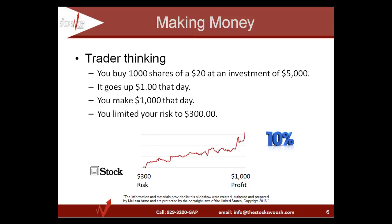Trader thinking says you buy 1,000 shares of a $20 stock and your investment is $5,000 or even less, depending on whether you have 4-to-1 or 10-to-1 leverage. The stock goes up $1 that day, you make $1,000 that day, and you've limited your risk to $300. Now you may be saying, I assumed the stock would go up $2 in a year, and now I'm assuming it'll go up $1 in a day. This is very true though — we see this happen every single day.